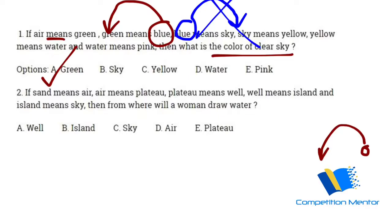Move next. If sand means air, air means plateau, plateau means well, well means island, and island means sky, then from where will a woman draw water? From where do women draw water? From well.